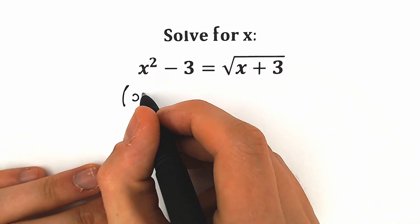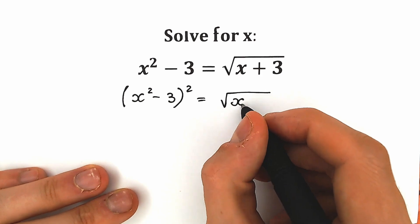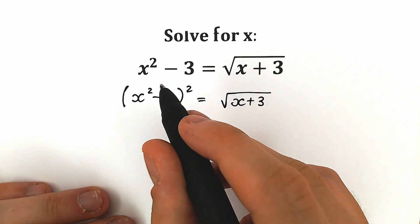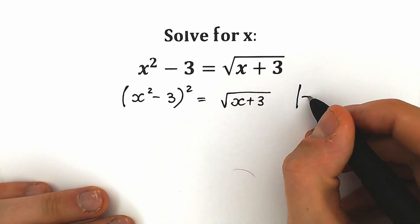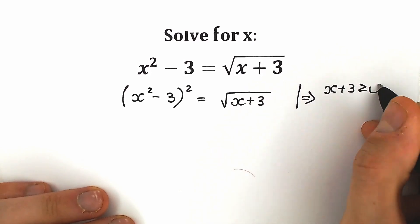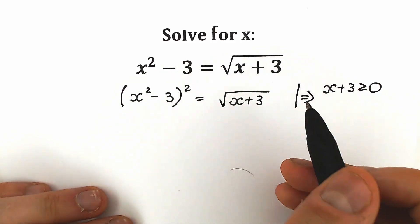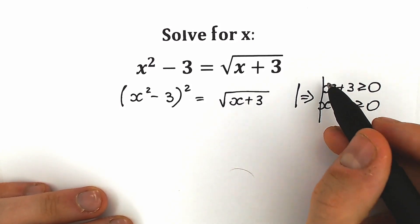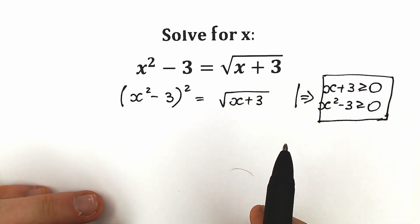Let's square our left side. So as a result we have x squared minus 3, squared on the left side, and square root of x plus 3, squared on the right side. A lot of students forget about a very tricky moment: if you're talking about a square root, the expression inside needs to be positive. So don't forget — x plus 3 must be greater than or equal to 0, and x squared minus 3 must be positive as well. These are extremely important inequalities. We're going to come back to them a little bit later.